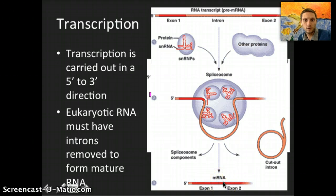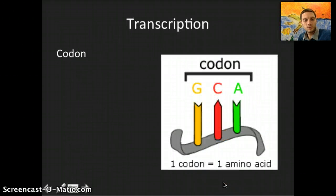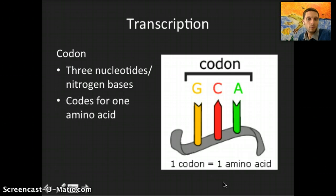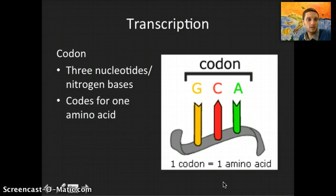Transcription is also dependent on something called a codon. A codon is three nucleotides — three nitrogen bases in a row — and those three make up a codon. What this does is code for, or provide instructions to call for, one amino acid. We'll see how this comes into play during translation, but a codon is three nucleotides that codes for one amino acid.